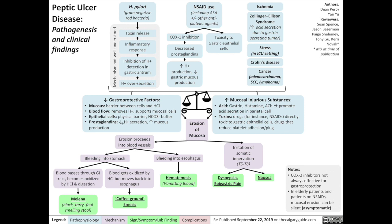Prostaglandins, which function in reduction of hydrogen ion secretion as well as increased mucus production, are also reduced. On the other side of the scale, there is an increase in substances that injure the gastric mucosa. This includes increased production of hydrochloric acid caused by gastrin, histamine, and acetylcholine, which all promote acid secretion by the parietal cells. Toxins — for example, drugs like NSAIDs — can be directly toxic to gastric epithelial cells. There can also be drugs that reduce platelet adhesion and its ability to form a platelet plug, leading to easier bleeding.